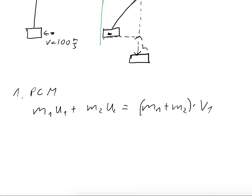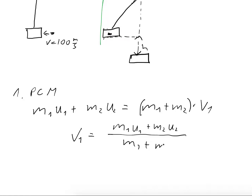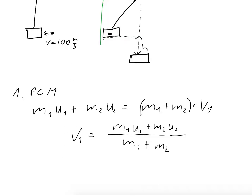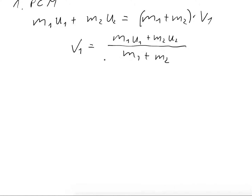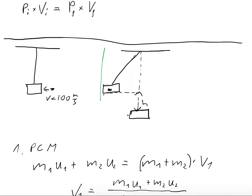We use the momentum equation to find v1: v1 = (m1u1 + m2u2) / (m1 + m2). Once we have v1, we apply conservation of mechanical energy. Initially, the combined mass moves at speed v1, so it has kinetic energy and zero potential energy.